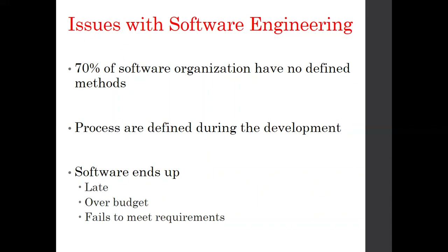The second important issue is that processes are defined during development itself — only when we are already developing the software do we adapt some process. The formal way is that all things should be streamlined before development. As discussed in previous lessons about the four V's and W5H, we have to plan the software first. This is a major drawback.